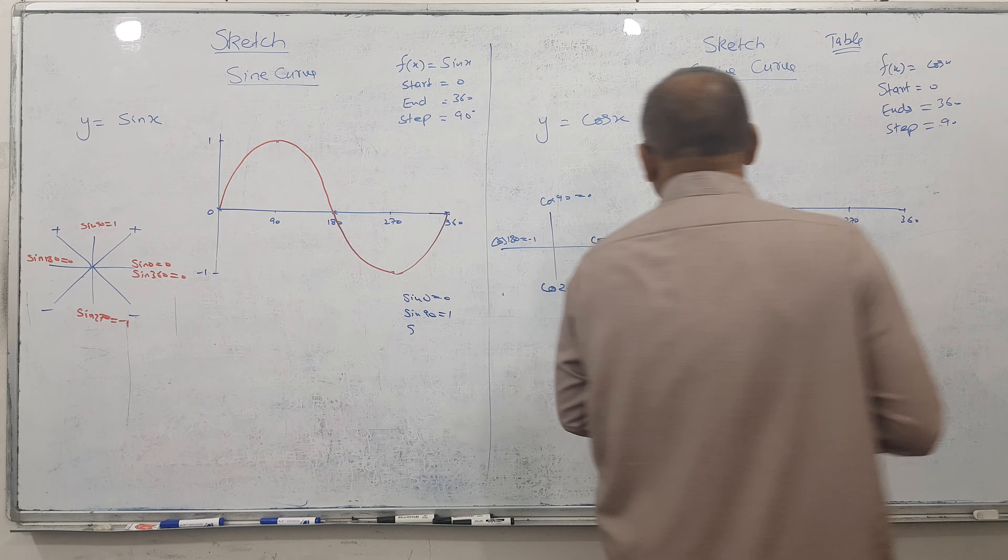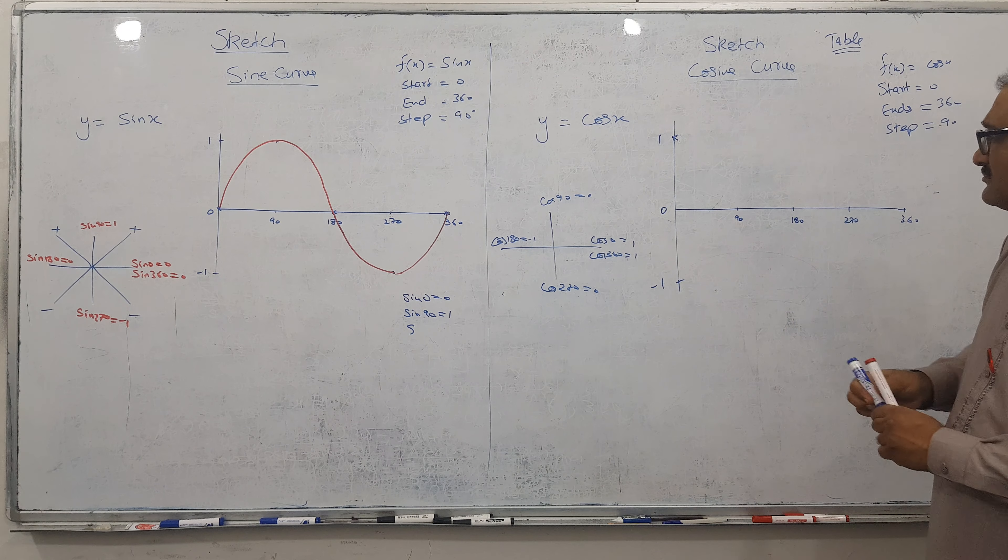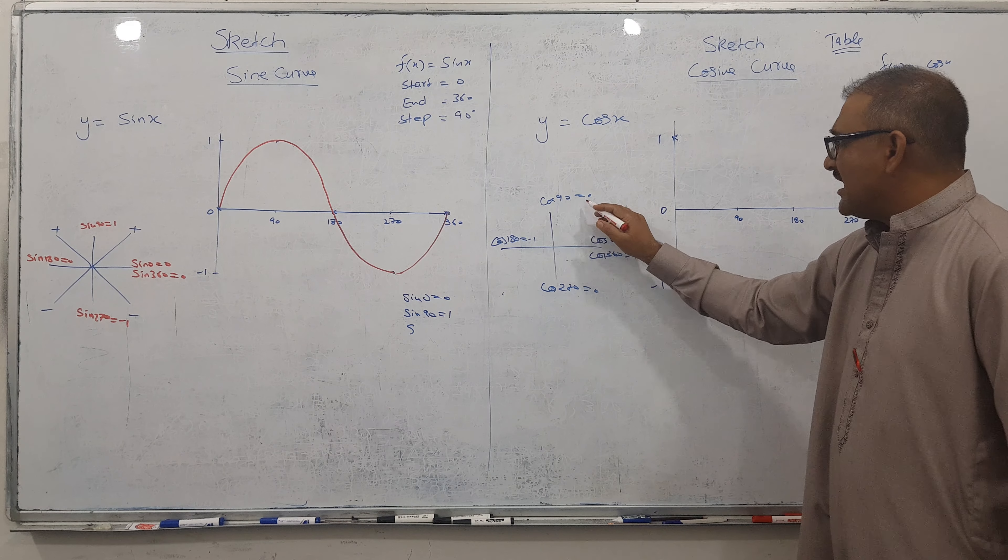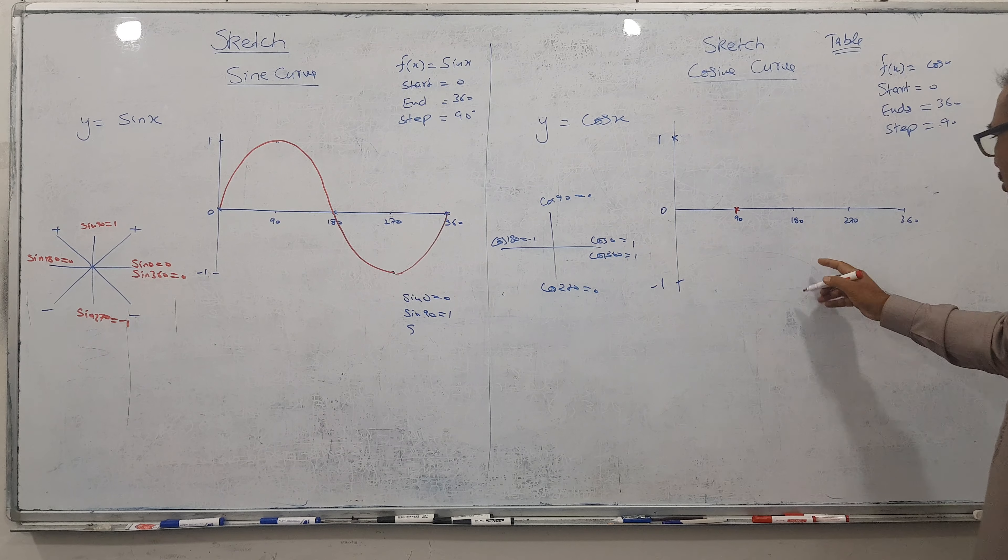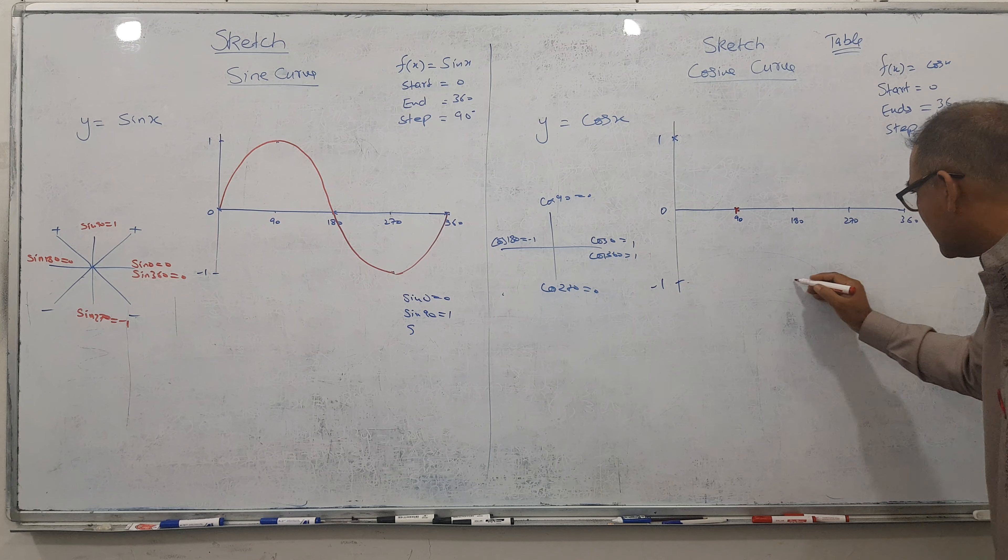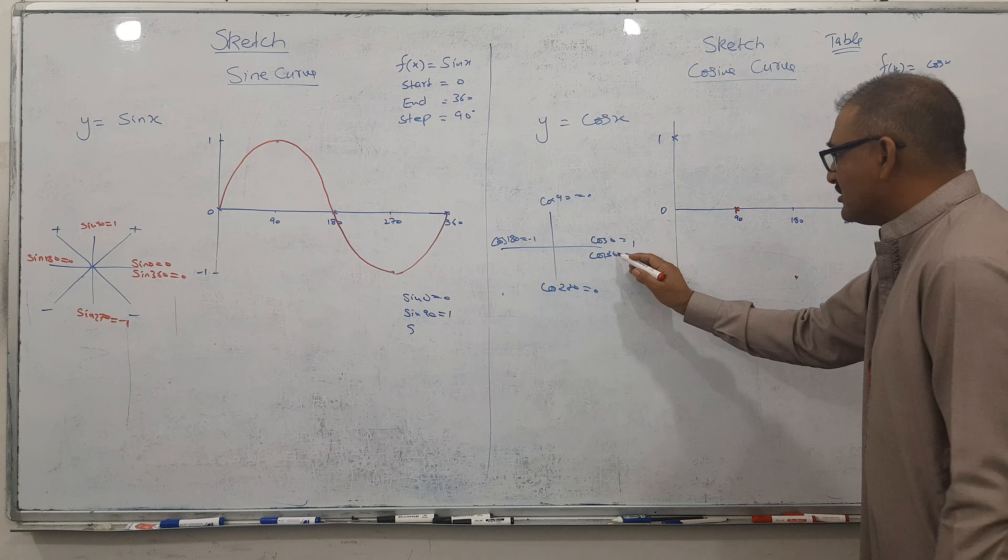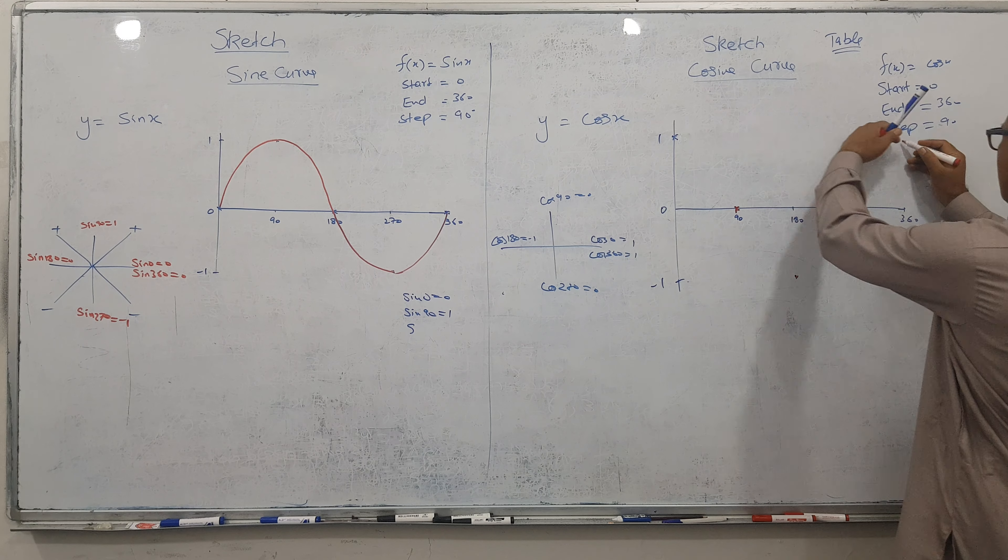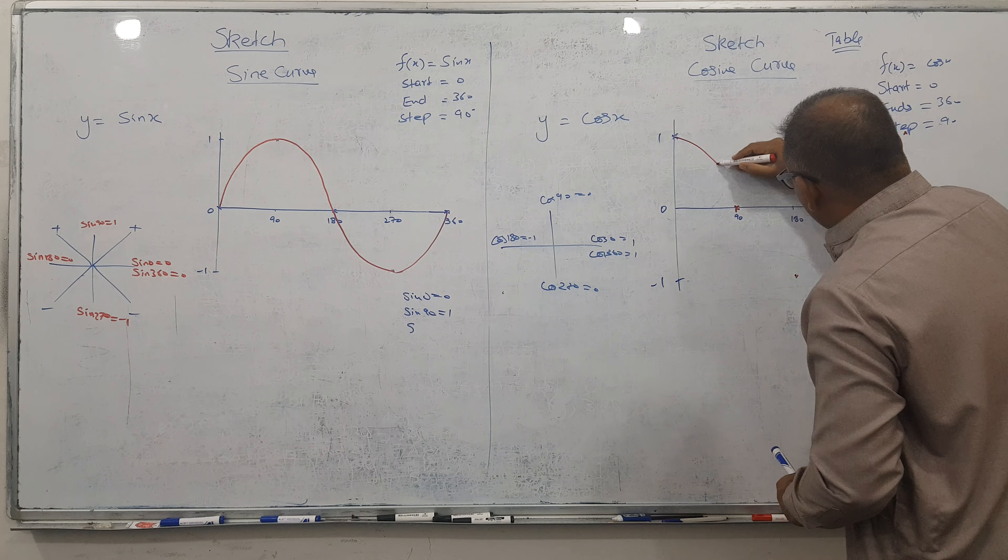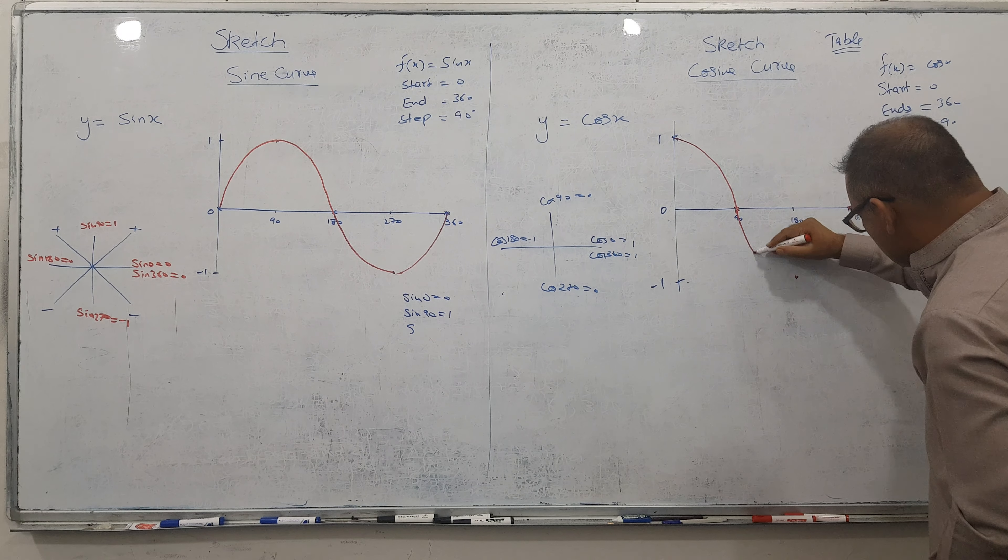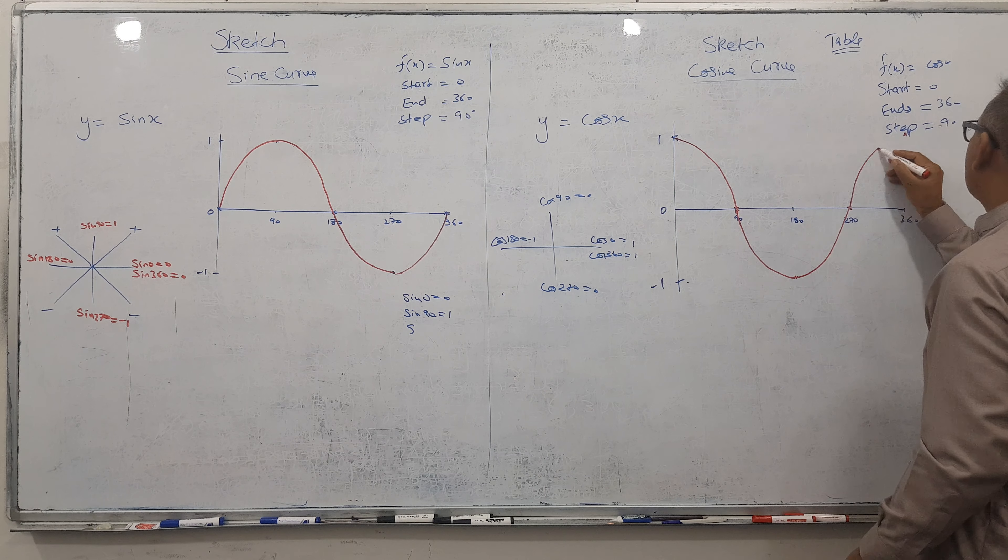So let's start. When I start, I know 0 is 1, so start from here. 90 is 0, it reaches here. And 180 it reaches minus 1. So 180 and minus 1 here. At 270 it's 0, again it comes back. And 360 is 1, so 1 is here and 360, they meet here. So let's start: first quadrant, second quadrant, third quadrant, fourth quadrant.